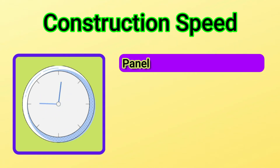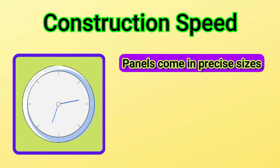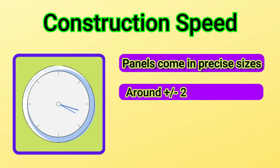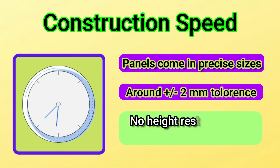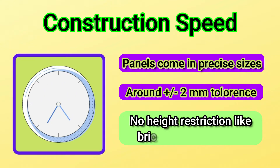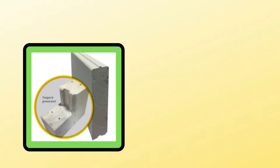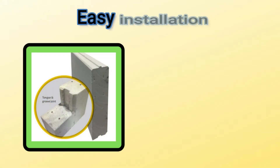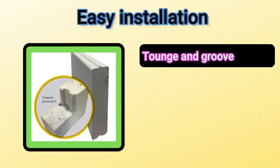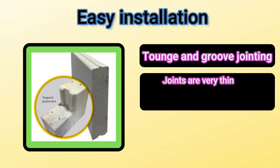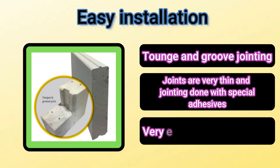Next, the most important point is construction speed. The ALC Panels come in precise sizes and the tolerance is around ±2 mm. It is very easy to fix and there is no height restriction like that of conventional brick masonry. They are very easy to install. The tongue and groove jointing method is used, with very thin joints made with the help of special adhesives.